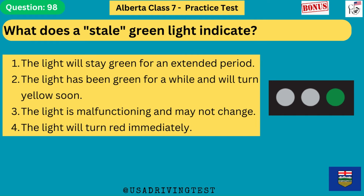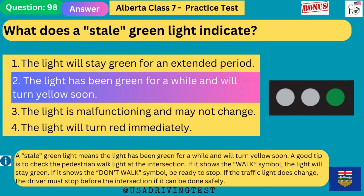What does a stale green light indicate? 1. The light will stay green for an extended period. 2. The light has been green for a while and will turn yellow soon. 3. The light is malfunctioning and may not change. 4. The light will turn red immediately. The answer is 2: the light has been green for a while and will turn yellow soon. A good tip is to check the pedestrian walk light — if it shows the walk symbol, the light will stay green; if it shows the don't walk symbol, be ready to stop. If the traffic light does change, the driver must stop before the intersection if it can be done safely.